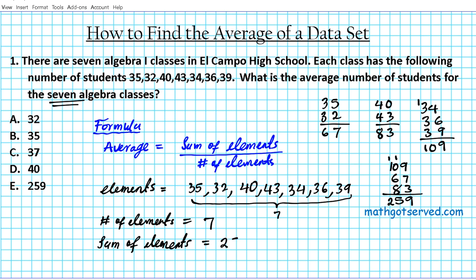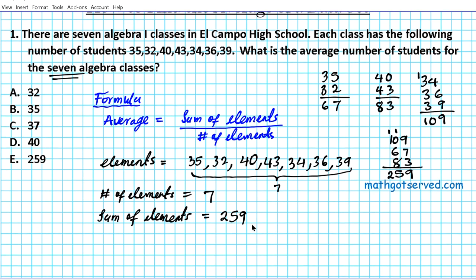So we have everything we need to calculate the average: we have the sum of elements and the number of elements. So the average - let me just set up my work here. What we did is we said 35 plus 32 plus 40 plus 43 plus 34 plus 36 plus 39.